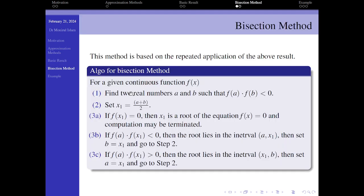Here we can see the bisection method algorithm. For a given continuous function f(x), find two real numbers a and b such that f(a) and f(b) are of opposite sign. That means one is positive, the other one is negative.